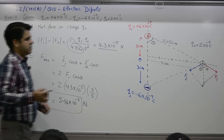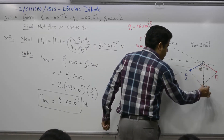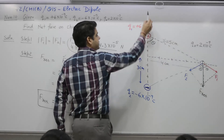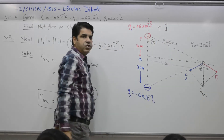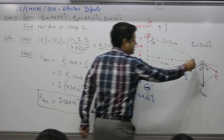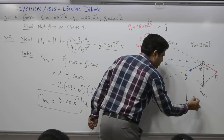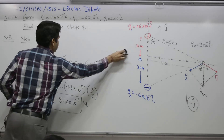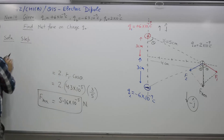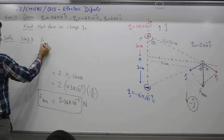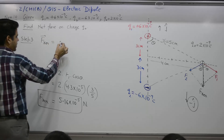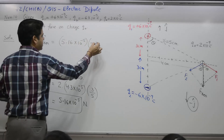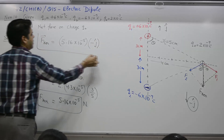Step 3: Direction of the resultant force. The +y direction is j-cap and the −y direction is −j-cap. The resultant force points in the −j direction. So F resultant = 5.16 × 10⁻⁵ N in the −j direction (i.e., negative y-axis direction).